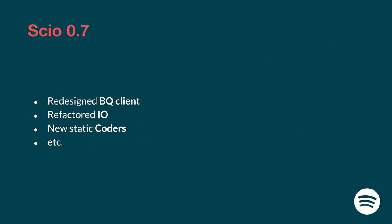We've reworked all the IOs in Scio — that's a much bigger change. We wanted to make IOs more generic so you can write IOs yourself. Also, compared to Scio 0.6, you no longer have to deal with everything around testing IOs. In older versions, when using IOs you had to define what they're supposed to do when testing. In Scio 0.7, that comes automatically — you don't have to deal with it as an implementer. IOs are now generic and there are new methods in SCollection and ScioContext that allow you to just read and write. You only need to know those two methods.